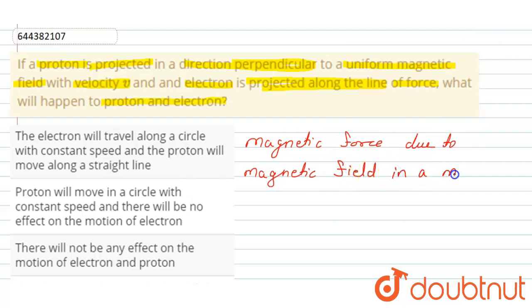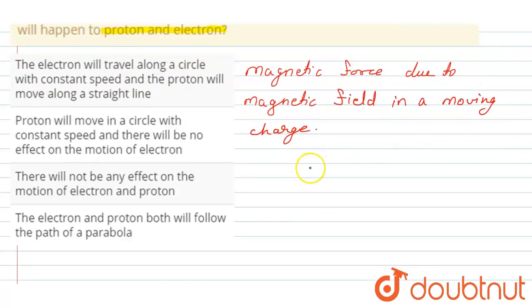In our moving charge will be equal to: force, magnetic force is equal to q into v cross B.